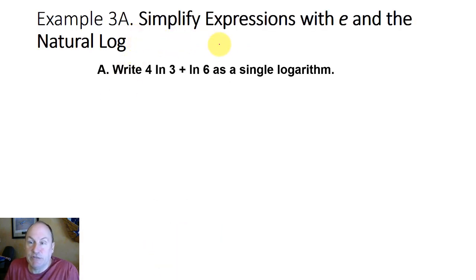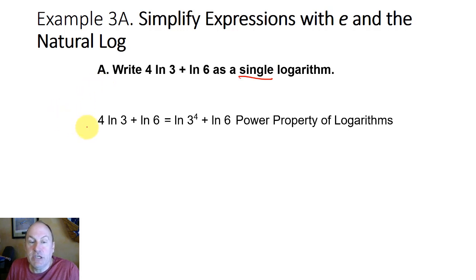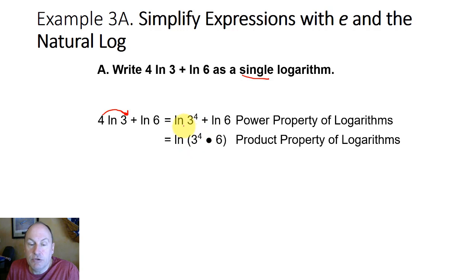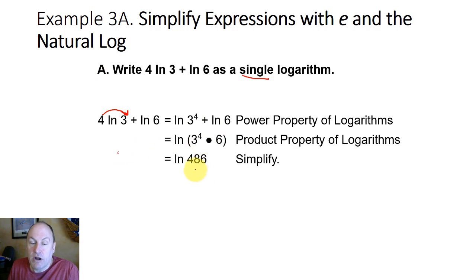Let's do some simplifications of expressions with e and the natural log. We're going to rewrite 4 times the natural log of 3 plus the natural log of 6 as a single logarithm. Using the power property of logarithms, 4 times ln(3) can be written as ln(3^4). Then using the product property, ln(3^4) + ln(6) becomes ln(3^4 × 6), or ln(486).